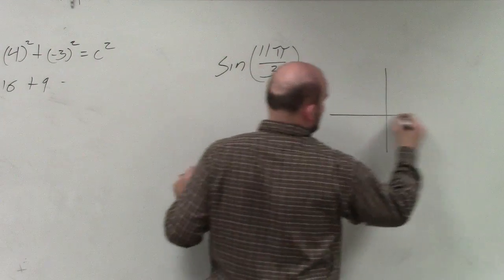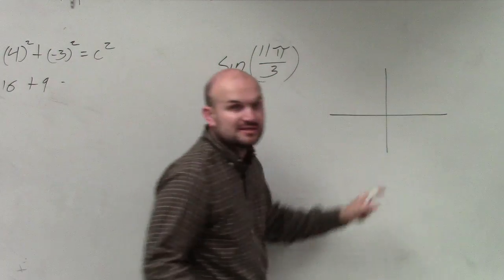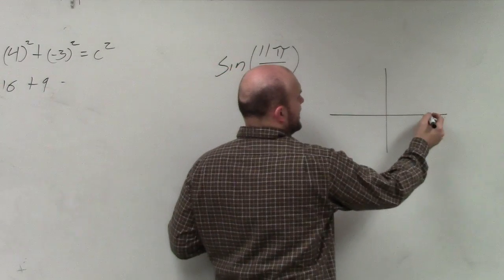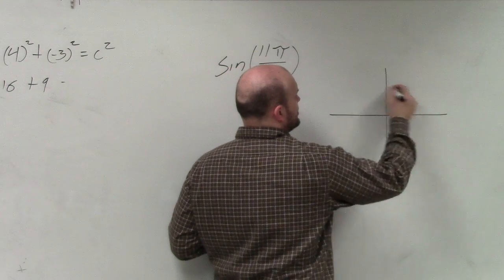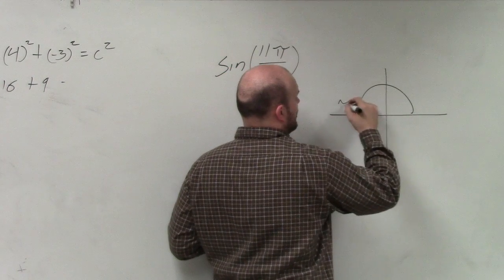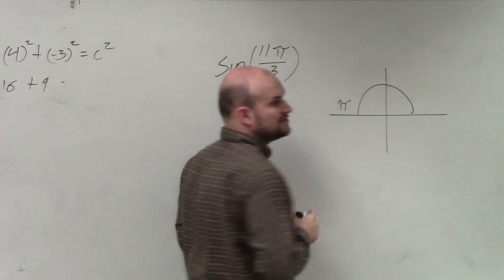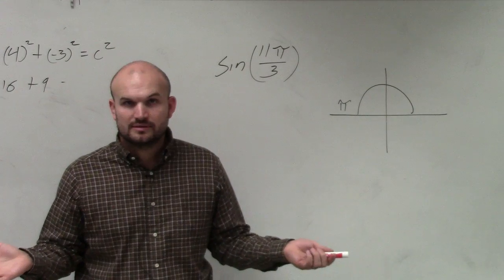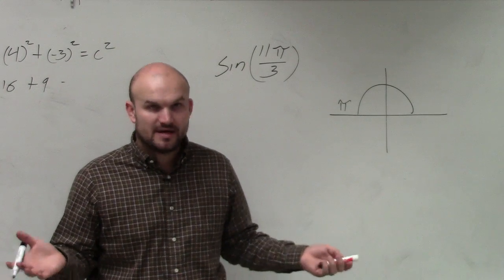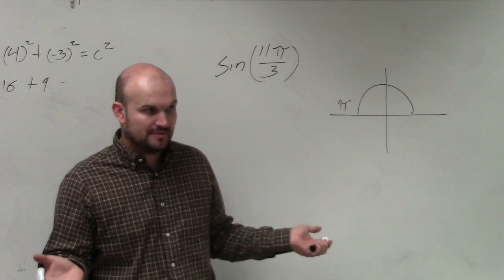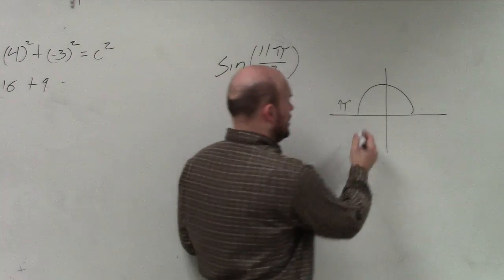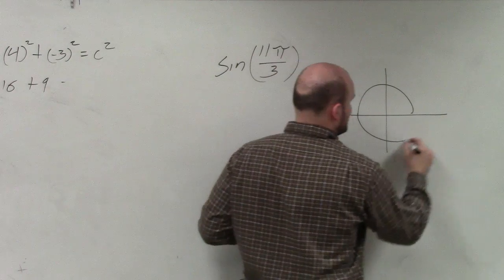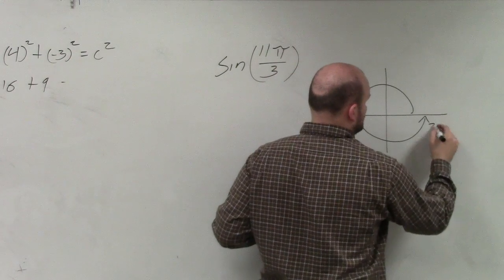Now, if we were to graph this, we know that halfway around a circle is pi, and all the way around the circle is 2 pi.